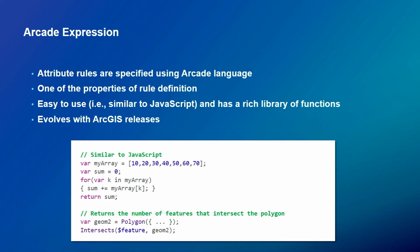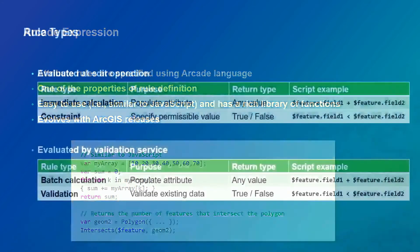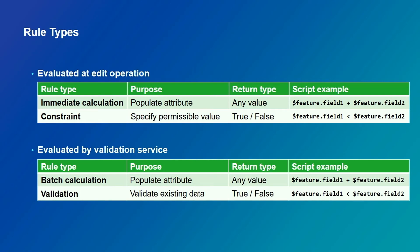The Arcade expression, from the rules perspective, is one of the rule's properties — just plain text owned by the rule. We classify attribute rules by when they are evaluated. If evaluated at the edit operation — create, update, or delete — we trigger two rule types: immediate calculation rules and constraint rules. The purpose of the immediate calculation rule is to populate other attributes; the return type from the script should be any value compatible with the target field.